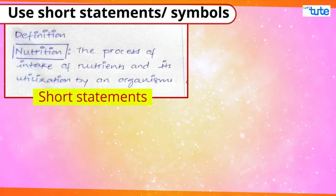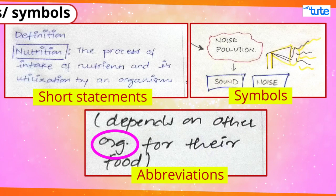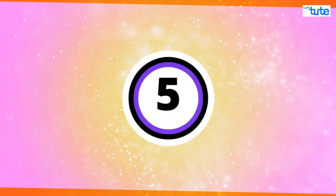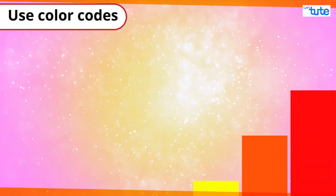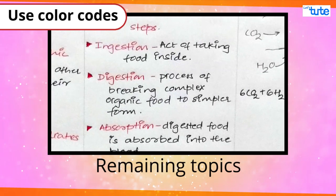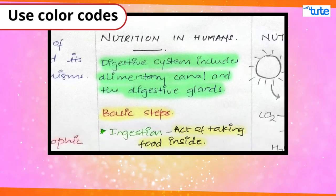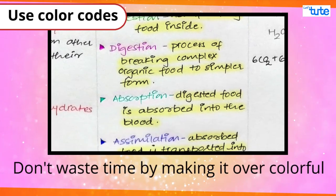Use short statements, symbols, or abbreviations wherever possible or needed. Try color coding things like write the definitions with blue ink, key points with red ink, and the remaining topic with black ink. And friends, please don't make it over colorful and waste a lot of time.